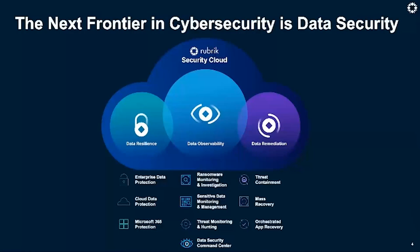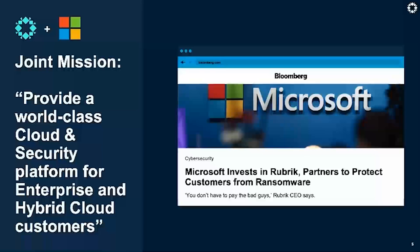And what an automated, holistic approach to data protection does to combat cyber risk. At Rubric, we provide a zero trust data security platform called Rubric Security Cloud, built from the ground up. Rubric Security Cloud helps customers around the world recover from cyber attacks, actions of malicious insiders, and operational disruptions — all in the name of business continuity. This makes your data across IaaS, PaaS, and SaaS resilient.